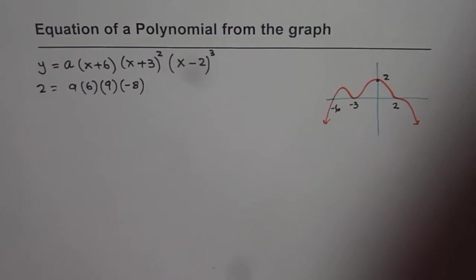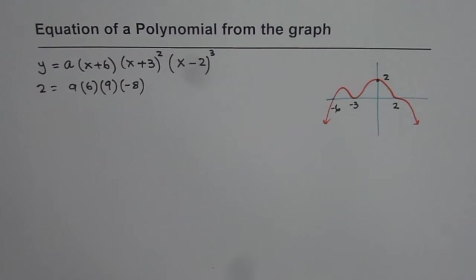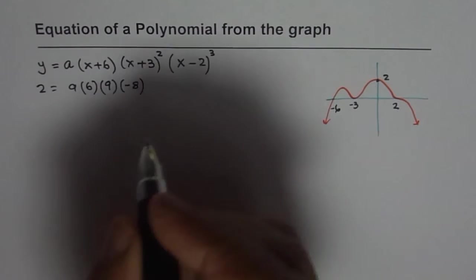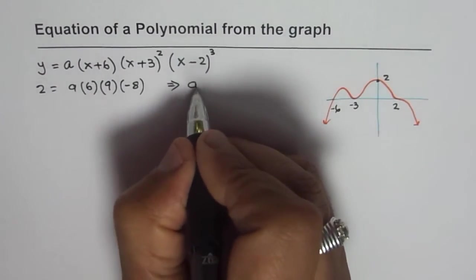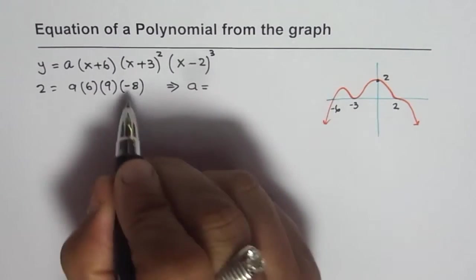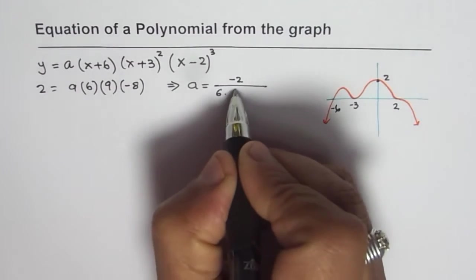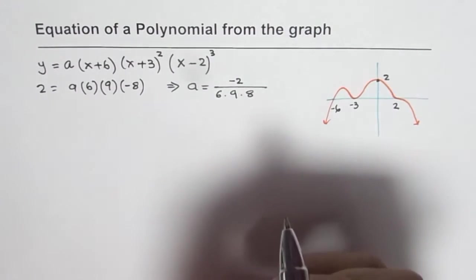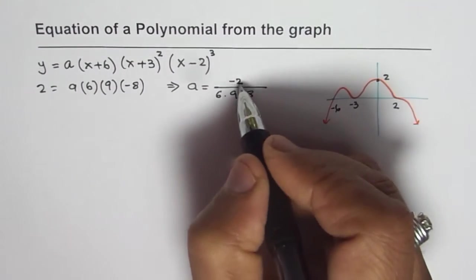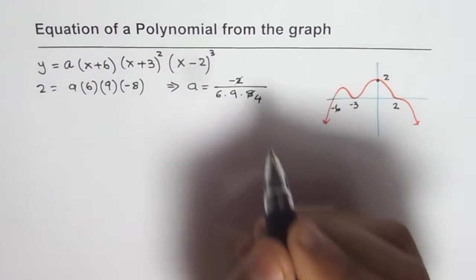So we get 6 times 9 times 8 equals to a and so from here we can write what a is. From here a is equals to negative 2 divided by 6 times 9 times 8. So this can be simplified. So that gives you 4.